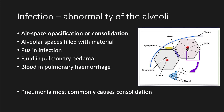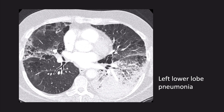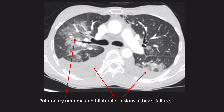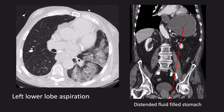Moving on to infection. When we think of pneumonia on a chest x-ray or CT, we think of consolidation, also known as airspace opacification. All this essentially means is that there is material in the alveoli making them look white on imaging. This can be pus and inflammatory material in infection, fluid in pulmonary oedema, and blood in pulmonary haemorrhage. Here's a case of pneumonia in the left lower lobe, with some changes on the right as well. Here is a case of pulmonary oedema — changes are symmetrical and central, the classical distribution, with bilateral pleural effusions. This is a case of aspiration pneumonia; note the distended fluid-filled stomach.